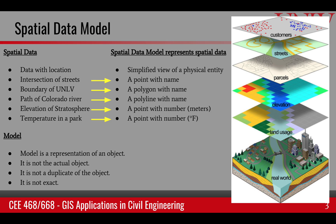Spatial data models are needed to describe the real world. Spatial data is data that has a location associated with it. For example, we can talk about the intersection of two streets, the boundary of our campus, the path of the Colorado River, the elevation of the stratosphere, or the temperature in a park. All of these pieces of data require some form of location information associated with them.